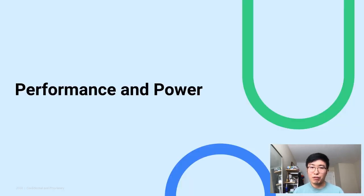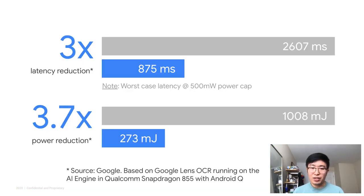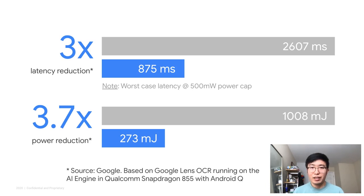Let's talk about some performance and power numbers. The key objective is to make inferences run fast and efficiently. Here are numbers from running the Google Lens OCR model on Pixel 4 when shipping Android Q last year. The NNAPI path is 3x the performance of the optimized CPU kernel of TF Lite. It also uses 3.7x less power, which is critical in this use case. Additionally, the whole model runs on the DSP instead of the CPU, freeing up CPU resources for other workloads if needed.